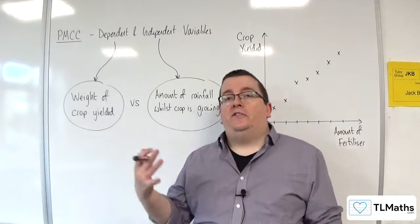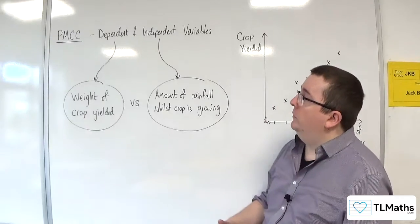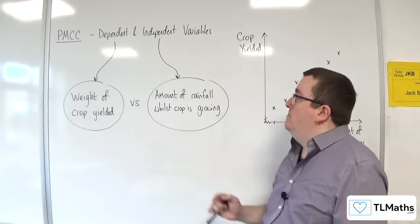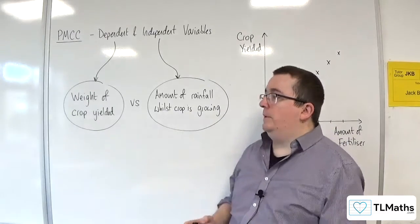In the previous video, we discussed dependent and independent variables, and we looked at the weight of crop yielded versus the amount of rainfall whilst the crop is growing.